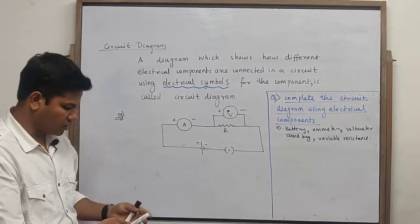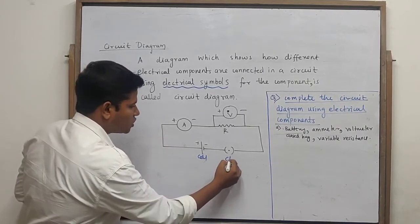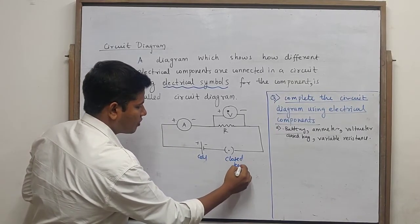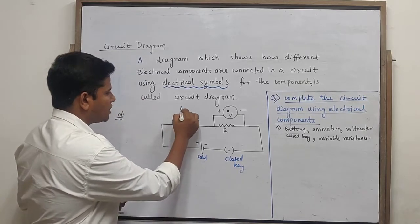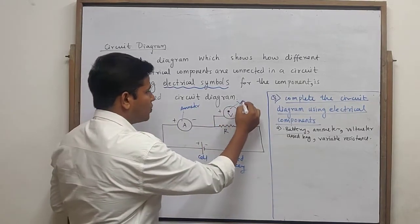In this you will see that this is another one. This is closed key. You all know this, ammeter. You all know this, voltmeter.